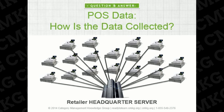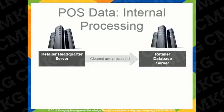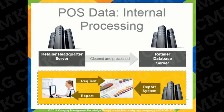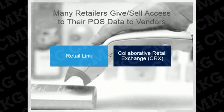For some retailers with highly sophisticated systems, this data is uploaded to headquarters instantaneously. From the headquarters server, the data is processed and cleaned, and then goes onto the retailer's database server. From the database server, the data gets linked into a file system. Employees at the retailer headquarters can then access the data on their computers and request reports through an internal reporting system, which differs by retailer. Common retailer POS retrieval systems include RetailLink for Walmart and CRX for Costco.